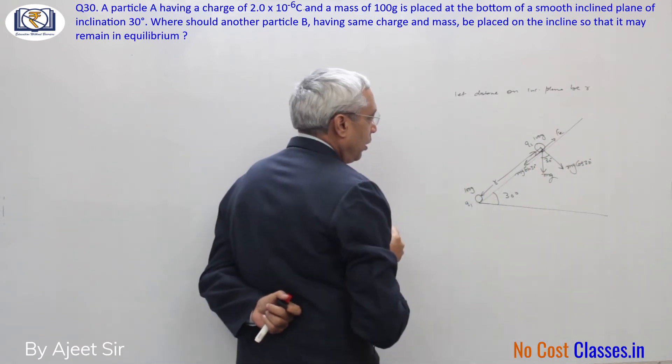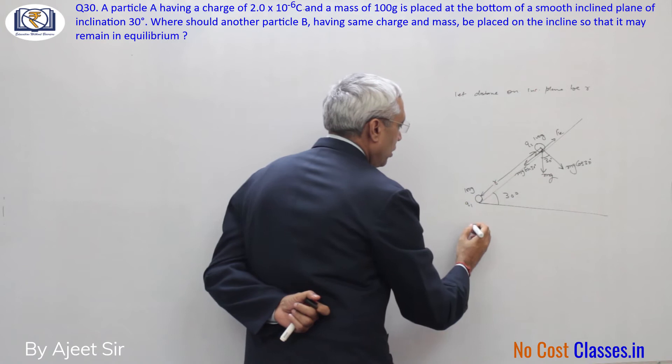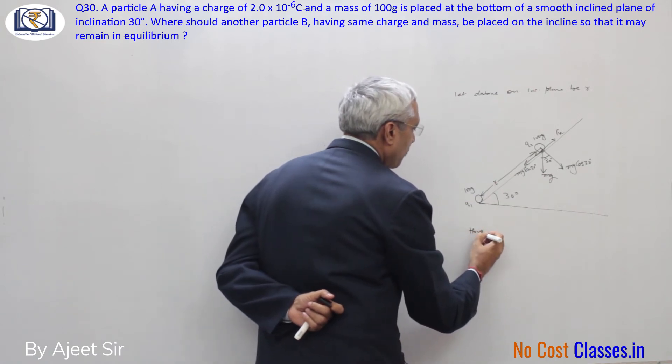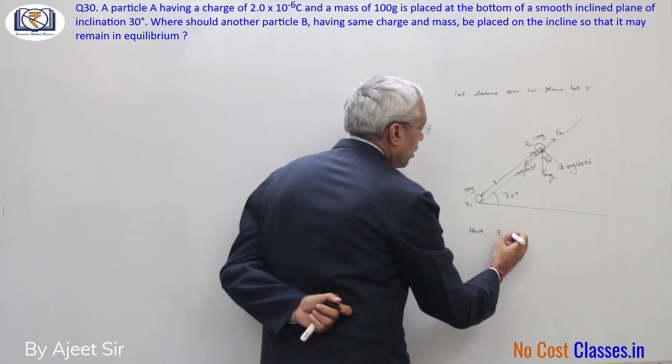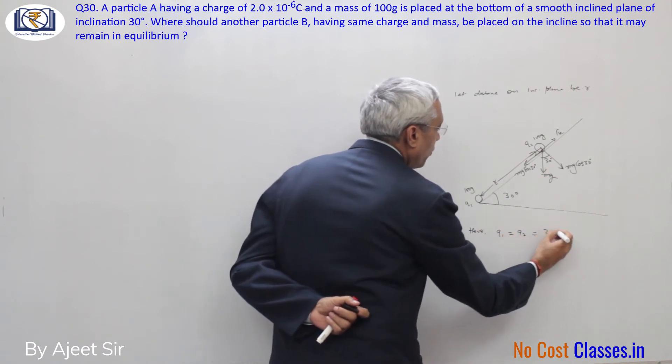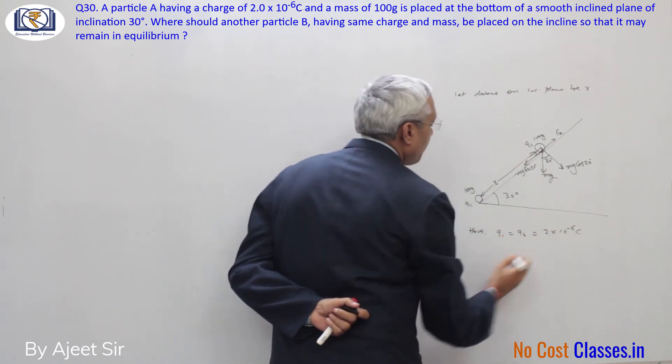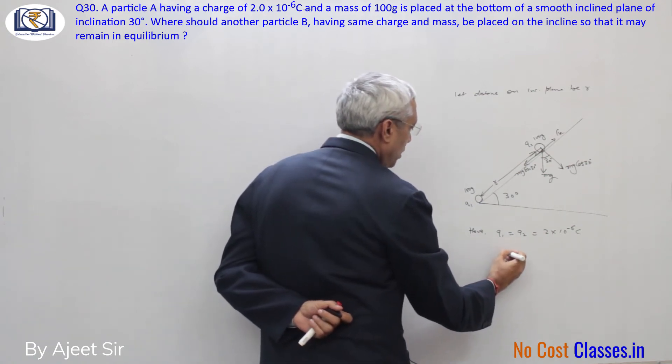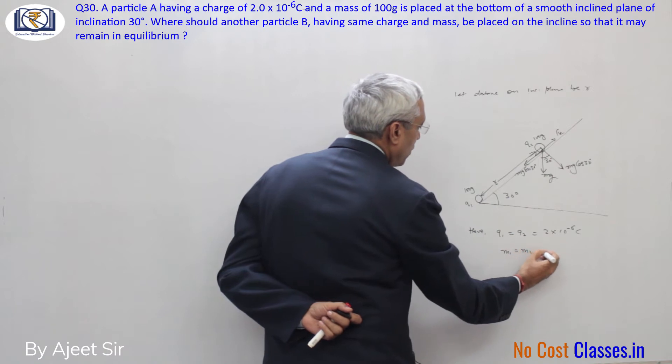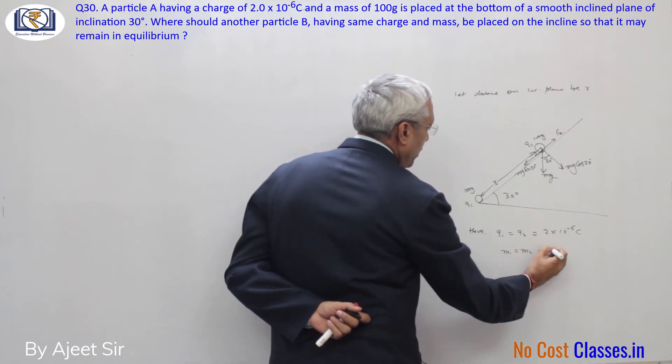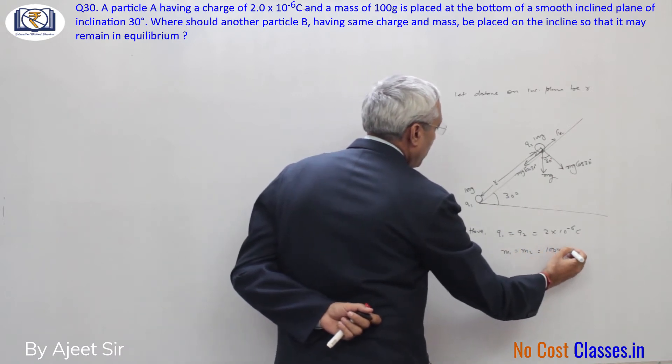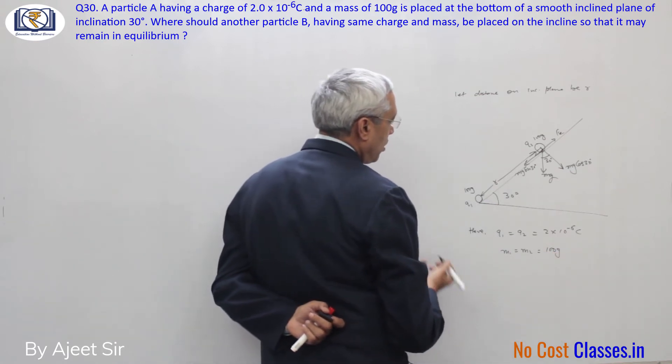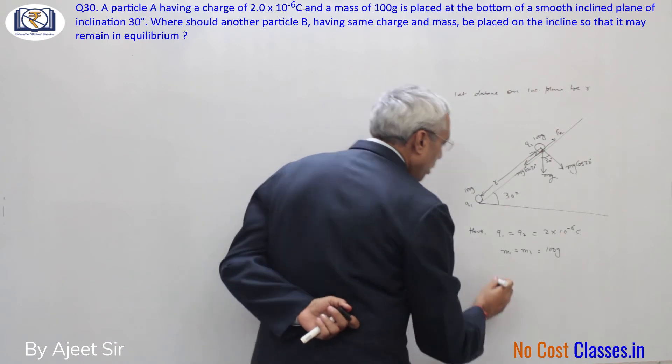Here q1 equals q2 equals 2 into 10 to power minus 6 coulomb, and m1 equals m2 equals 100 grams, and theta is 30 degrees.